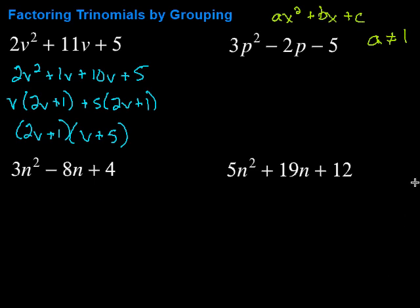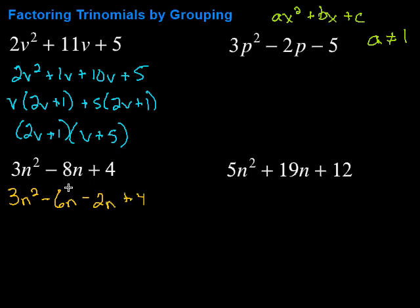Let's try another one. We're going to take a times c, so in this case it's twelve, and I'm looking for factors of twelve that add up to negative eight. Two and six will add up to eight, so I'm going to rewrite the middle term as minus six N minus two N. When we multiply those we get twelve, and when we add those together we get minus eight N. So we pull apart that middle term into the two terms that make it up.